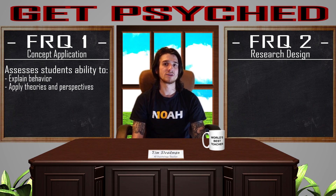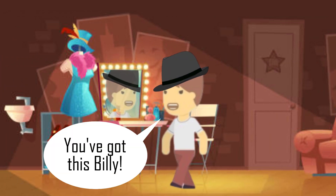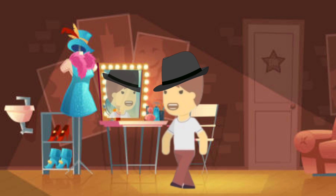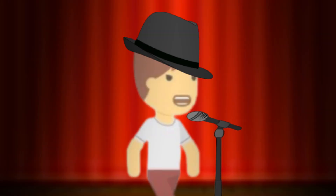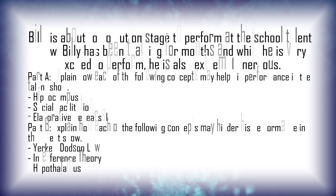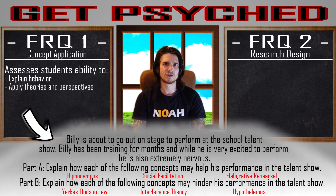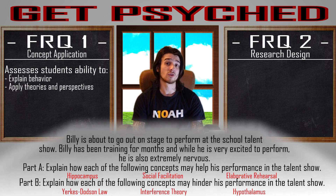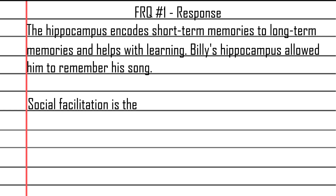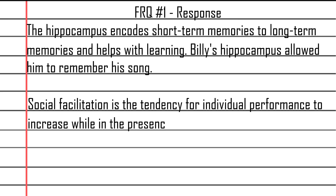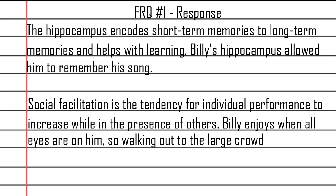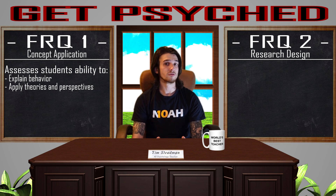Let's take a look at a hypothetical concept application FRQ. It is the night of the school talent show. Billy has been practicing for months to make sure his performance is on point. While he is super excited for the show, he is also very nervous. You have your initial prompt, then terms you have to apply. You would define the term and apply it to the prompt. For example: social facilitation is the tendency for individual performance to increase while in the presence of others. Billy enjoys when all eyes are on him, so walking out to the large crowd only motivates him to perform even better, increasing his performance. You properly defined the term and applied it to the scenario — there's your point.